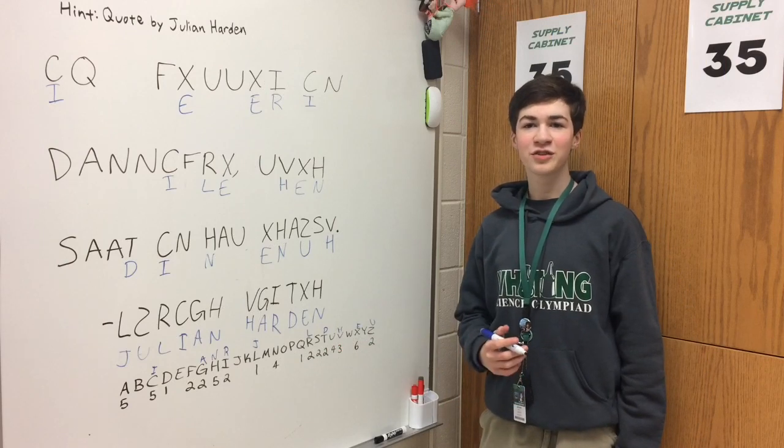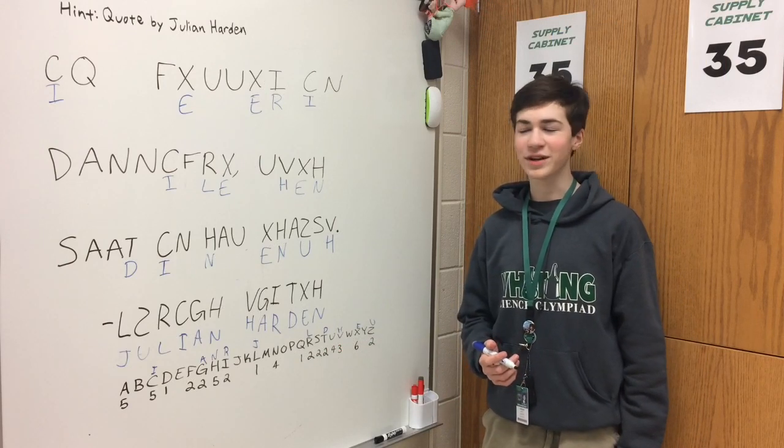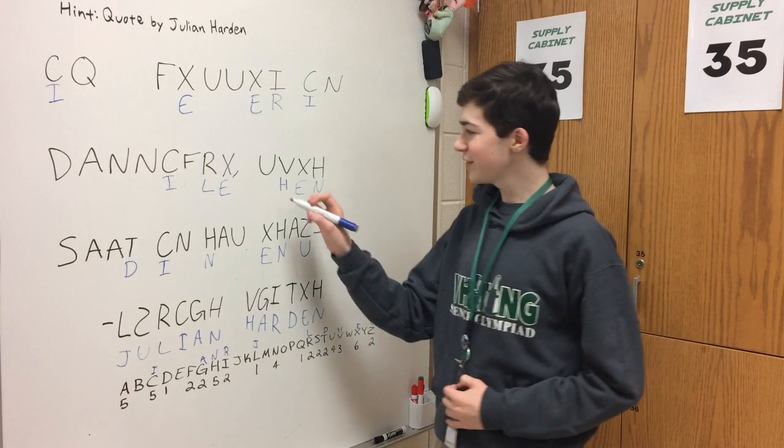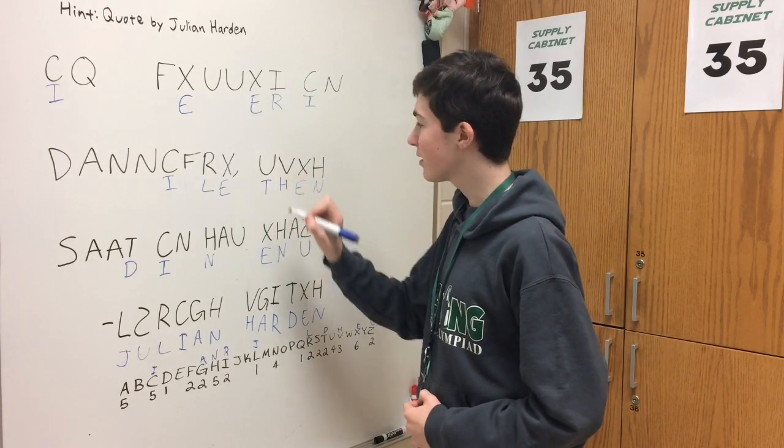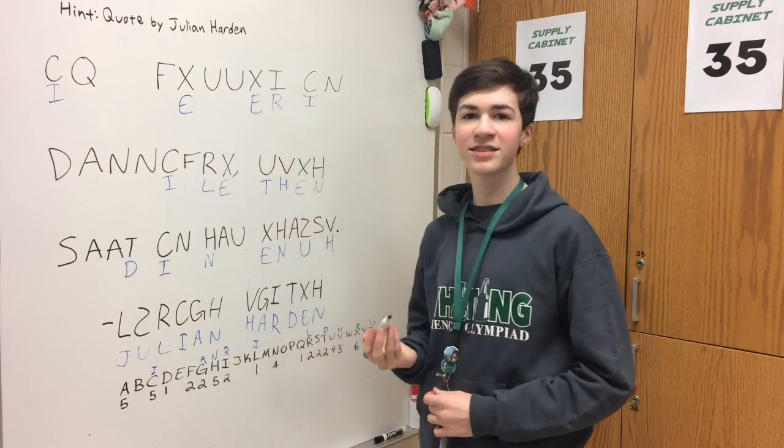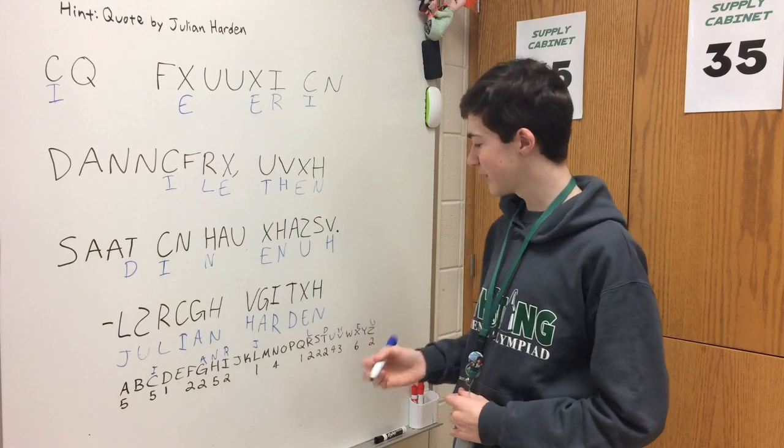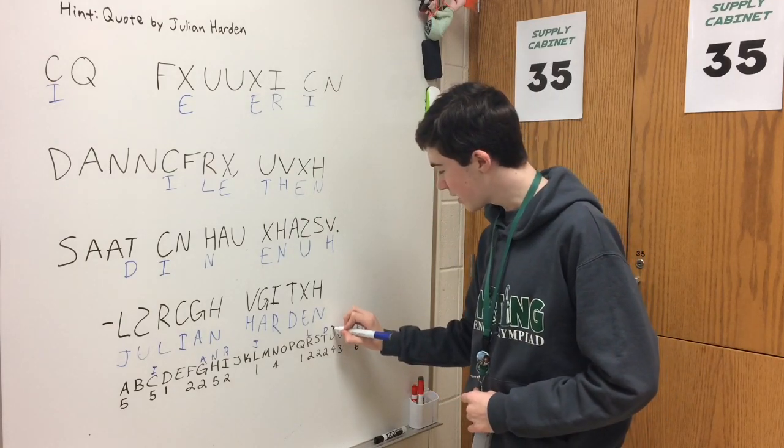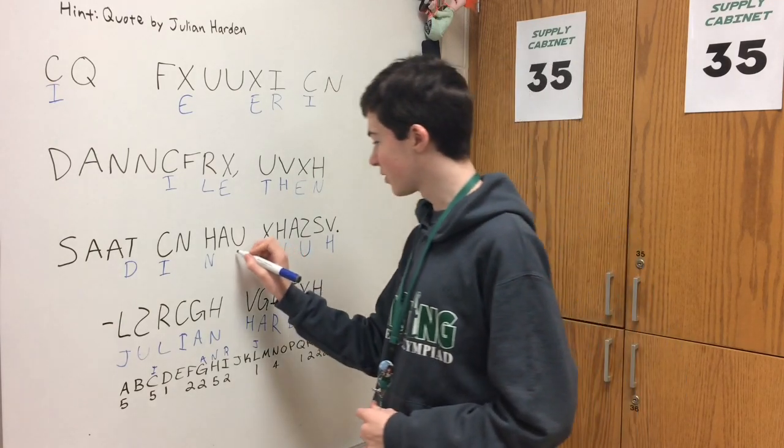Now that we've filled in the letters we know, we can start solving other words in the cipher. We can safely assume that this word is then, because it easily fits and then is a common word in the English language. Now we know that U is most probable as T.